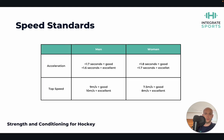In terms of speed standards for acceleration: for men, under 1.7 seconds for 10 meters is pretty good, under 1.6 would be excellent. For women, 1.8 seconds would be good and under 1.7 would be excellent. For top speed: for men, 9 meters per second would be good and 10 meters per second would be excellent — that would be international standard really. For women, 7.5 meters per second would be good and 8 meters per second would be excellent. These are general rules of thumb based on experience working with hockey players at international level, with no formal normative data.